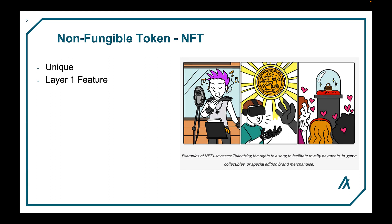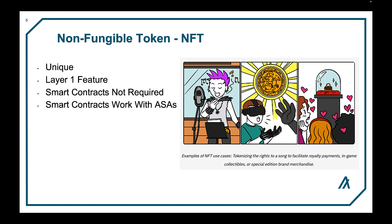Other blockchains implement NFTs as a standardized smart contract, but on Algorand it's a layer 1 feature. Thus, no smart contracts are required to create ASAs. However, they can be associated with a smart contract. For example, one can indeed use a smart contract to programmatically create ASAs.